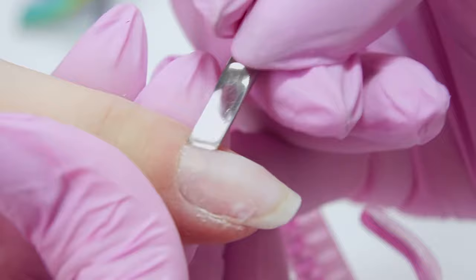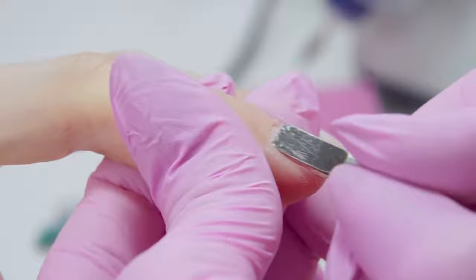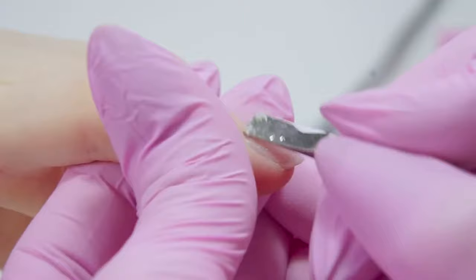Using the rectangular part of the pusher, clean out the dead skin from the nail plate. By doing this, we won't have to soak the nail for too long in a bath, so we can complete the manicure way faster.